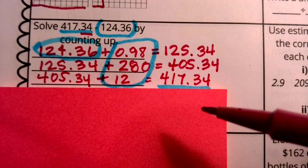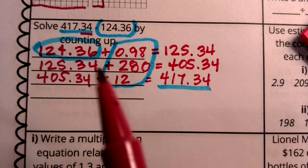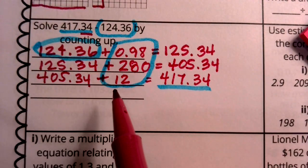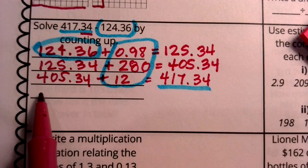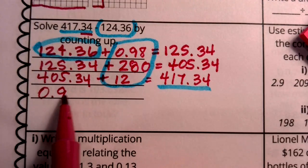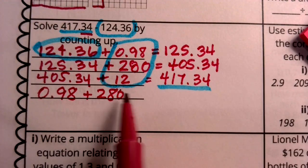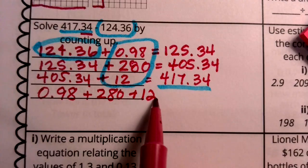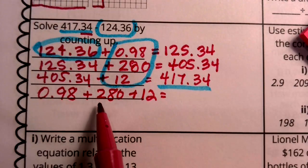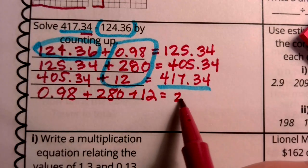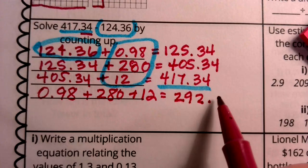So I'm not actually to the answer. What I've done is used the strategy. What I have to do now in order to really solve this is to add these quantities together to find out that part. So I'm going to add 98 hundredths to 280 to 12. When I add that together, here's my whole number 280, here's a whole number 12.